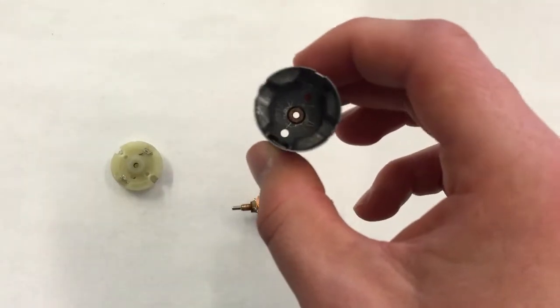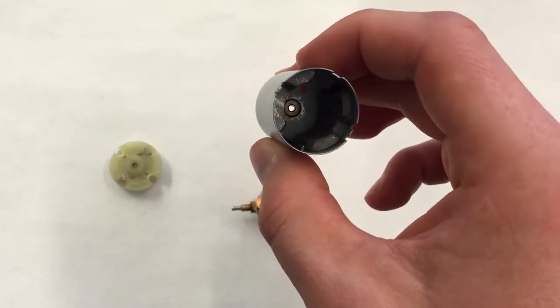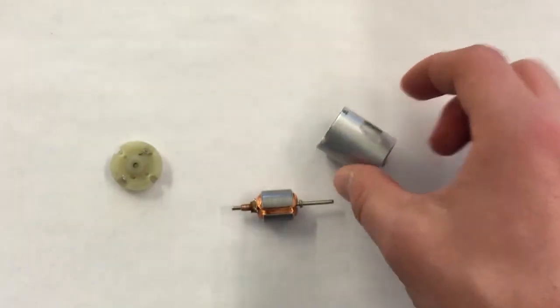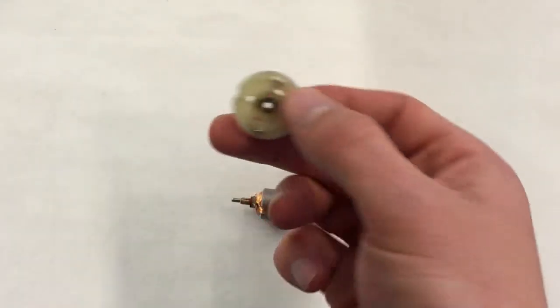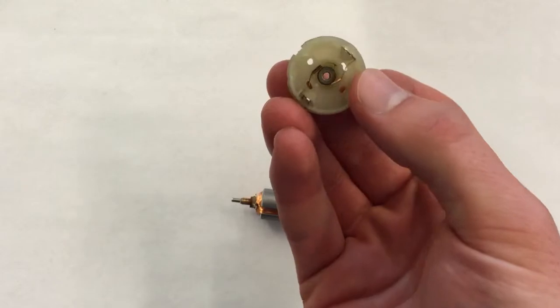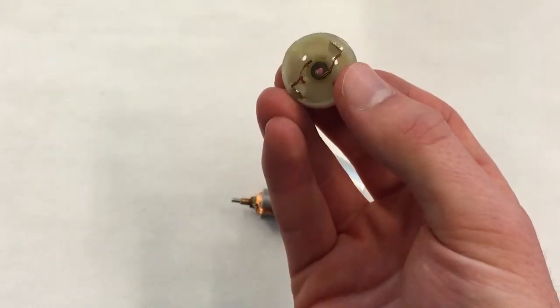In the housing of the motor, there are two permanent magnets on either side. In this piece of the motor, you can see the brushes, which transfer the electricity to the commutator rings.